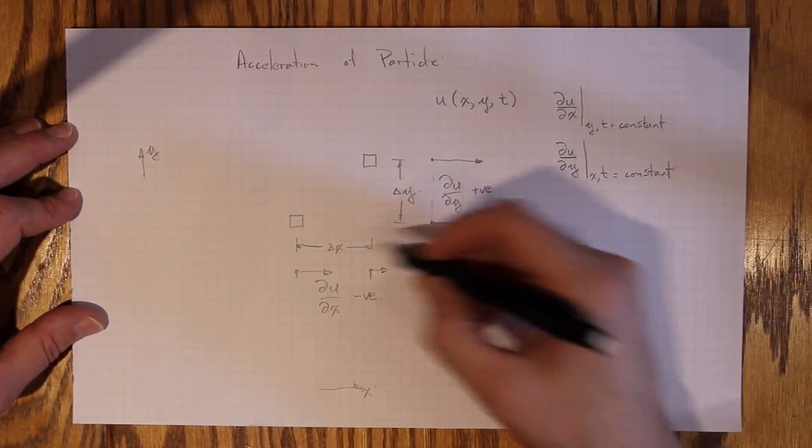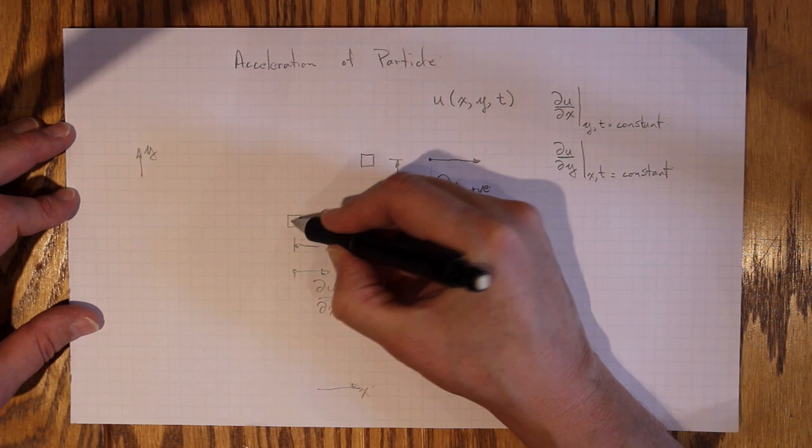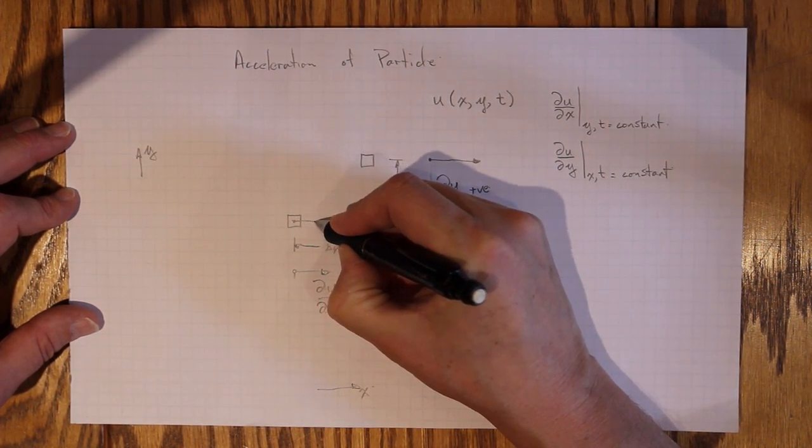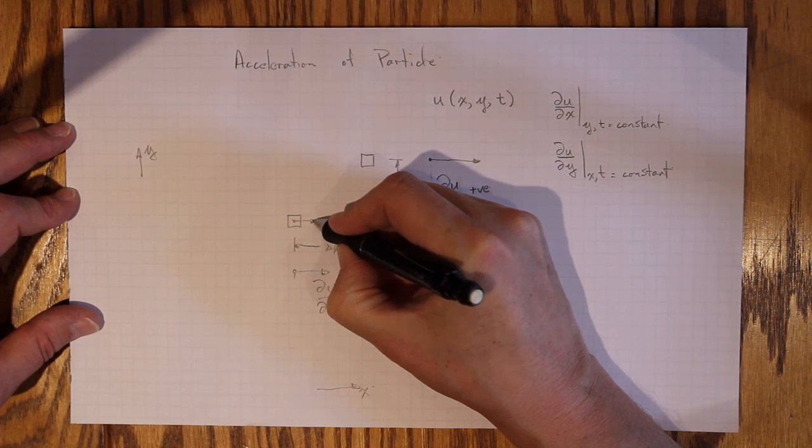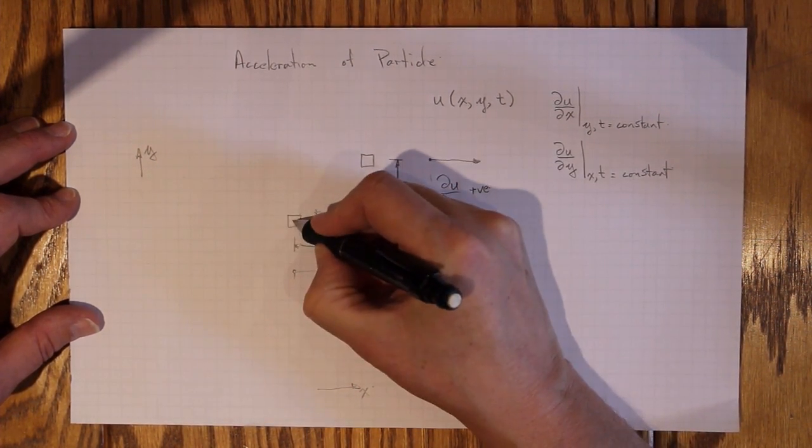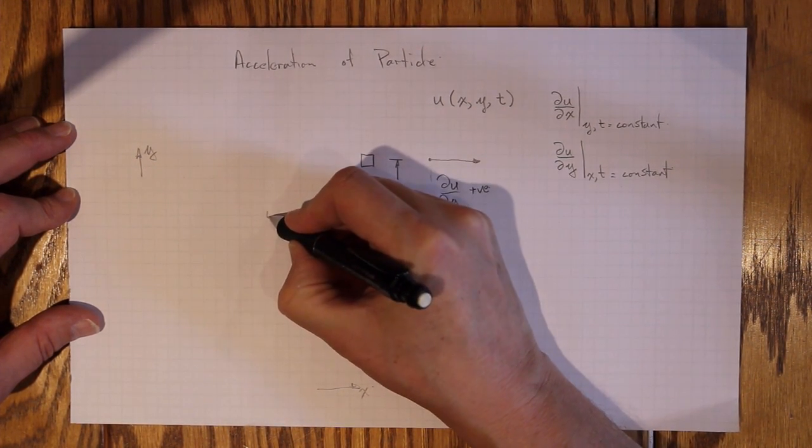And finally, if we just stay in one place, and look at time t versus time delta t, we might go from u equal to that value at time t, to u equal to this value at time t plus delta t,